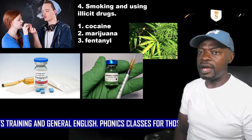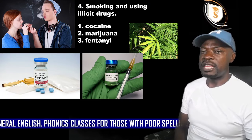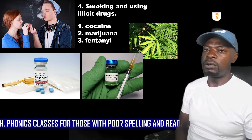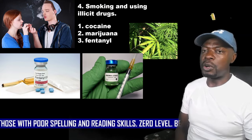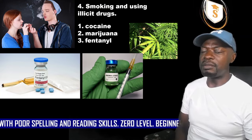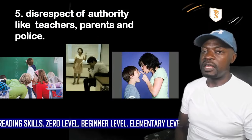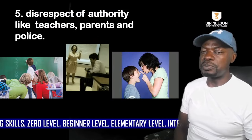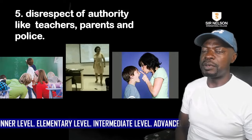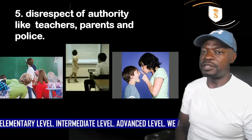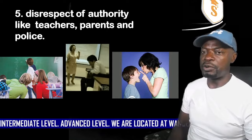Smoking and using illicit drugs — what we call illegal drugs, for example cocaine, marijuana and fentanyl — are also examples. Disrespect of authority: by authority, we mean people like teachers, parents, police and other people in authority.